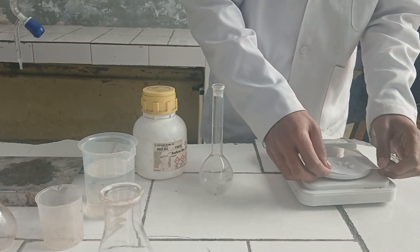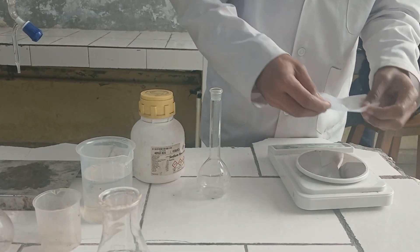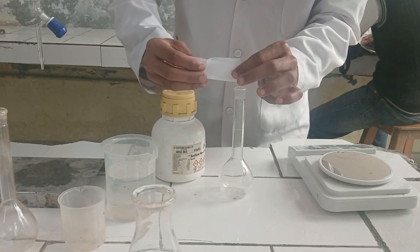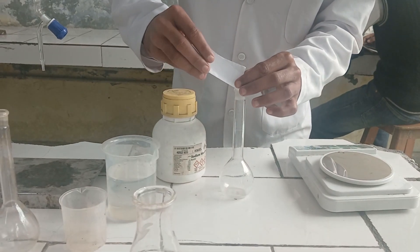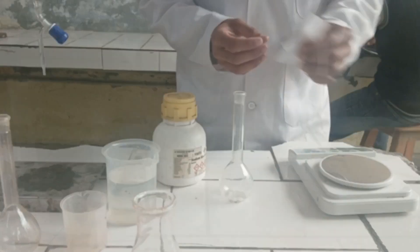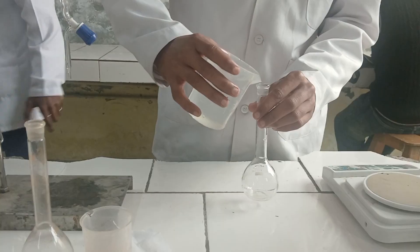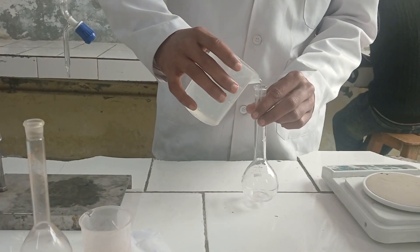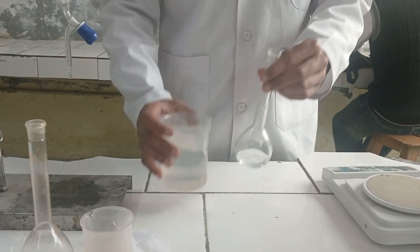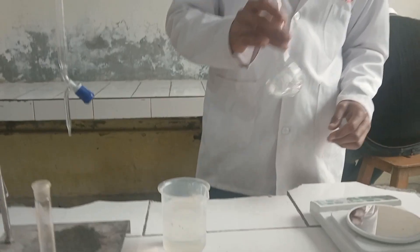You know that sodium hydroxide is hygroscopic in nature. So, we have to transfer it to the volumetric flask. Make up the volume up to 100 ml. Firstly, dissolve it completely until all the pellets get dissolved. So, we will vigorously shake it.